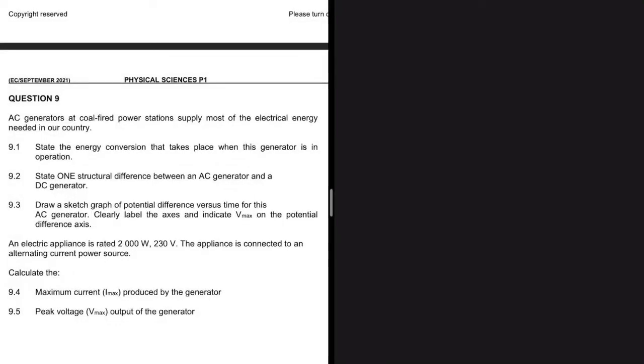AC generators at coal-fired power stations supply most of the electrical energy needed in our country. True. And then 9.1 says, state the energy conversion that takes place when this generator is in operation.